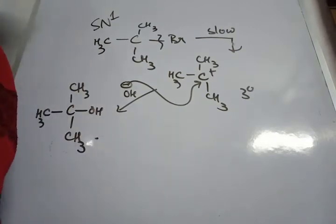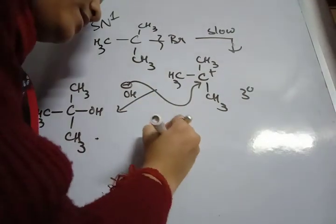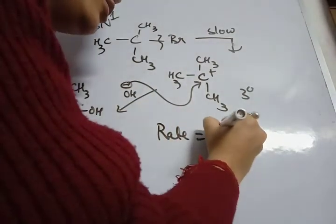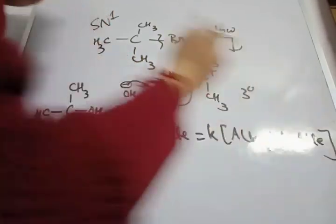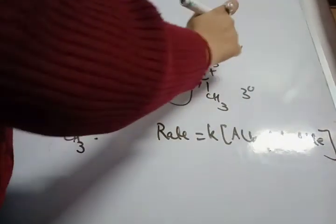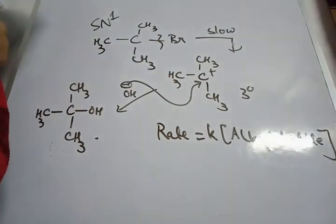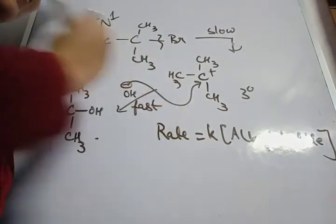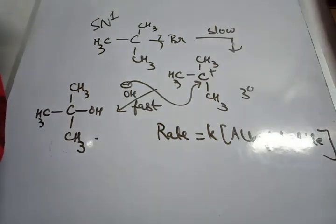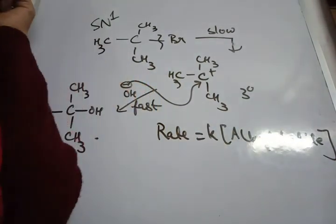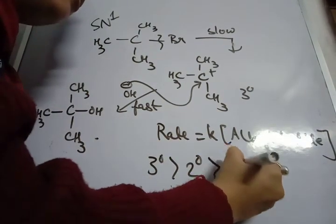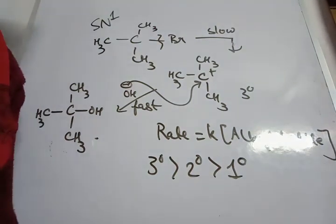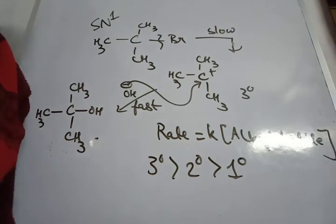The rate of the SN1 reaction depends on the stability of the carbocation, and rate is proportional to the concentration of the alkyl halide only. Since only one molecule — the alkyl halide — is involved in the slow step (RDS), it is a unimolecular reaction. The order of carbocation stability is: tertiary > secondary > primary. Benzylic and allylic carbocations have additional stability due to resonance.